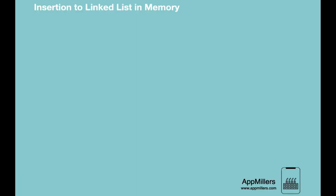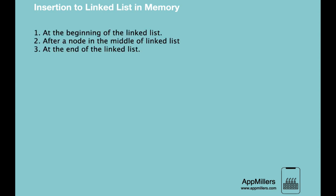In the previous lecture, we learned how to create a singly linked list. In this lecture, we will learn how to insert a node into a singly linked list and how it reflects in memory. There are three ways to insert a new node: at the beginning of the linked list, after a node in the middle, and at the end of the linked list.